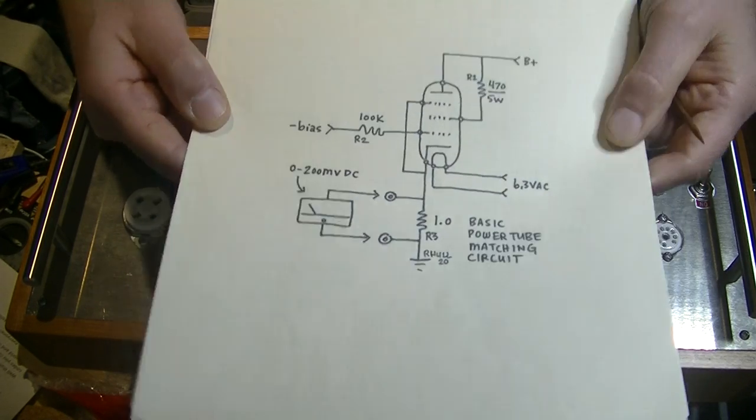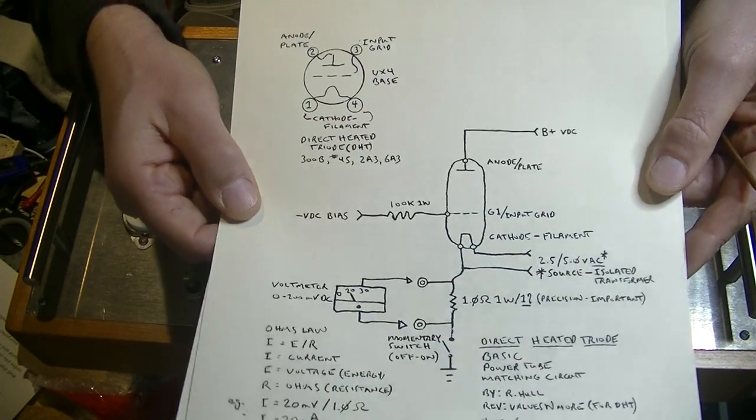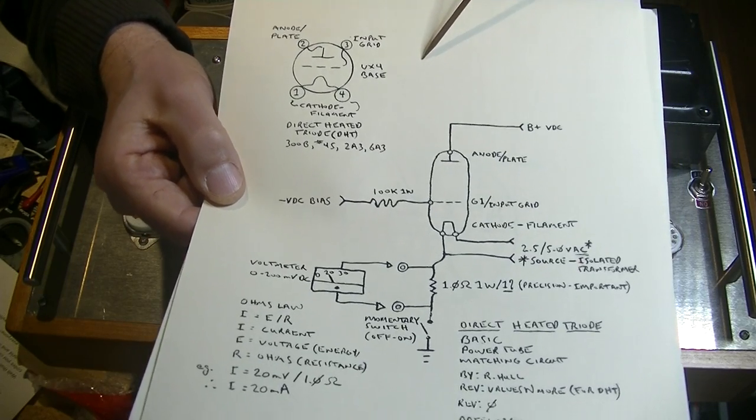So one part is the plate, second part is the input grid, third part is the cathode. That's as simple as a vacuum tube gets folks. Let's look at the next diagram. This is the same basic diagram except that this is for a direct heated triode. And the big difference here